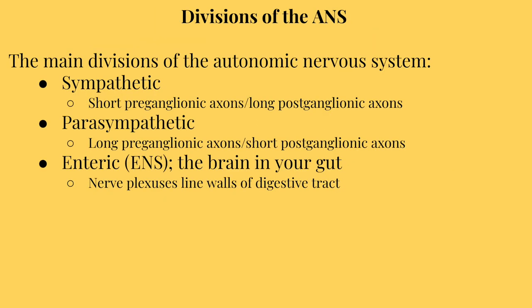The sympathetic and parasympathetic nervous systems are main divisions of the ANS. Sympathetic nerves have short preganglionic axons but long postganglionic axons, while parasympathetic nerves have long preganglionic axons but short postganglionic axons. There is also the enteric nervous system, considered a main division of the ANS — there are nerve plexuses in the digestive tract that regulate smooth muscle contraction and gland secretion, but we won't focus on that today.